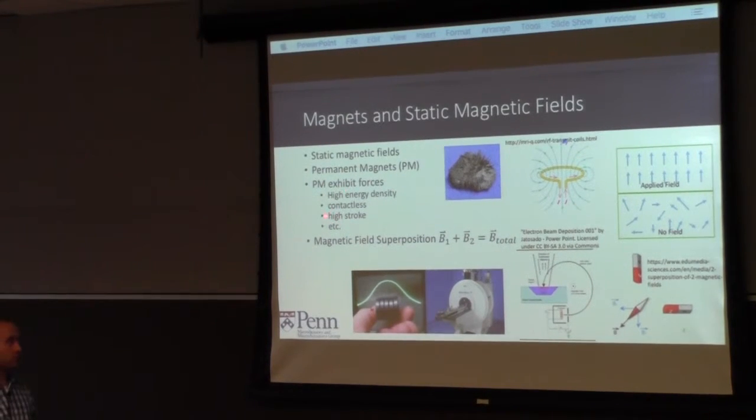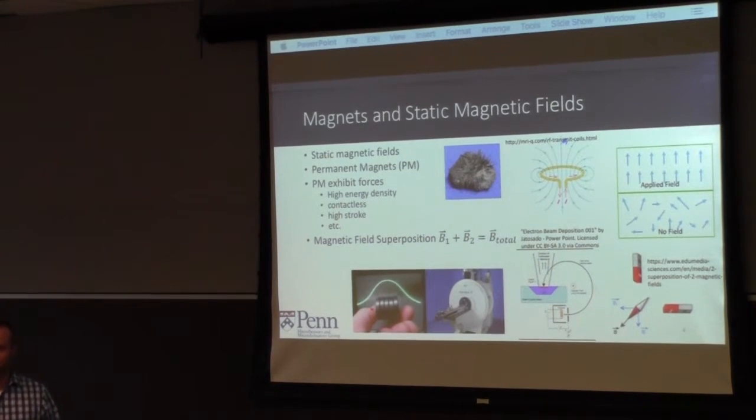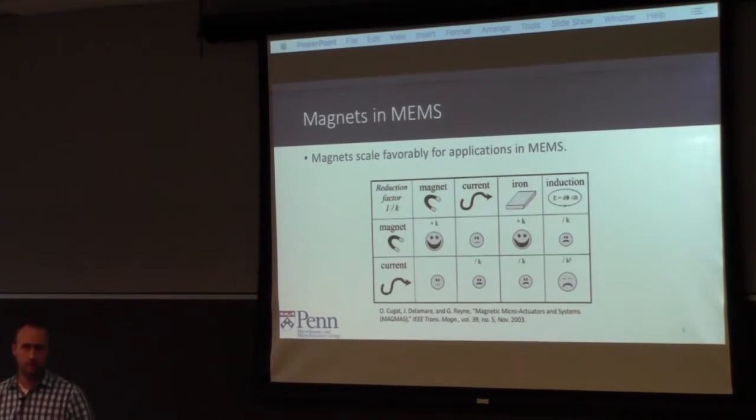A couple of things that are really important for magnets are that they are very high energy density and you don't have to touch anything to use them. In fact, that's also one of their downfalls and why a lot of people don't like to use them. For us electrical engineers, they can do very bad things to CRTs and scopes. Permanent magnets scale very well.